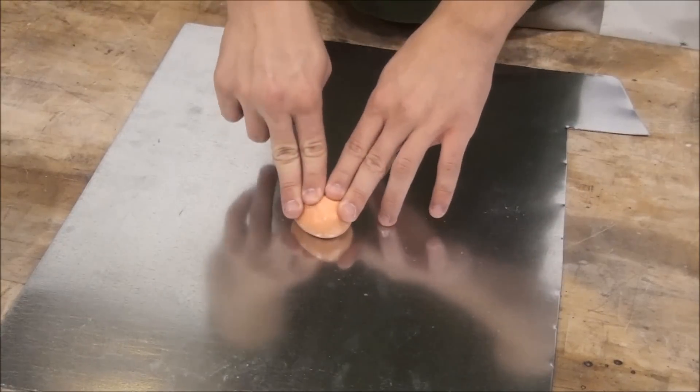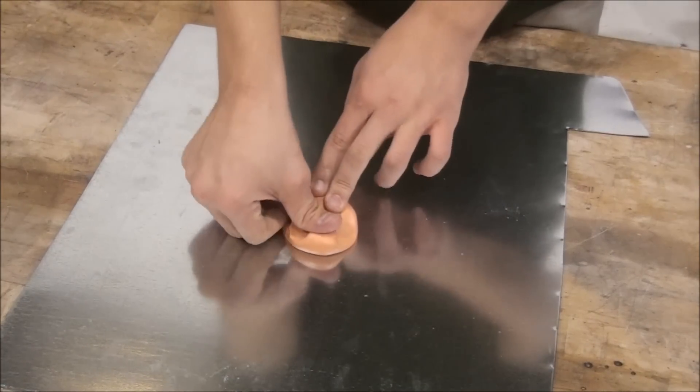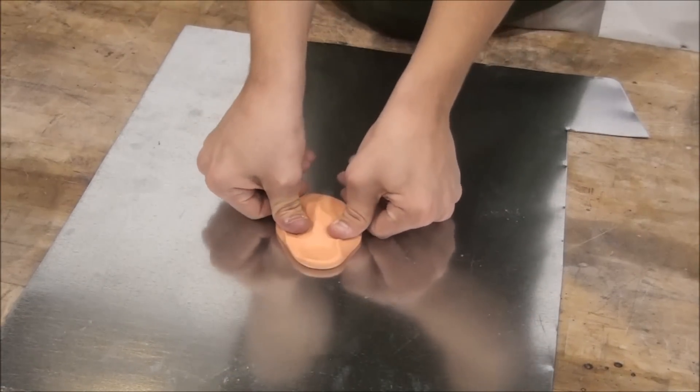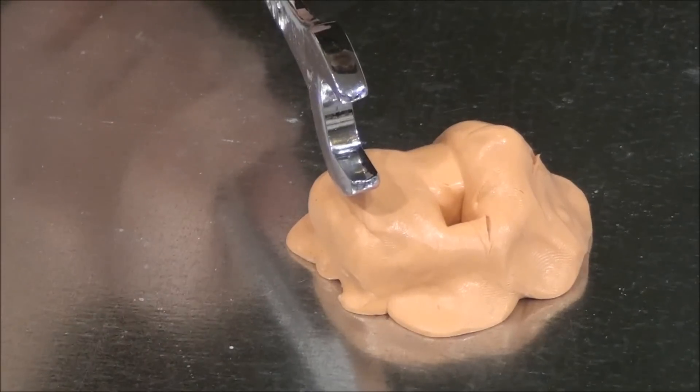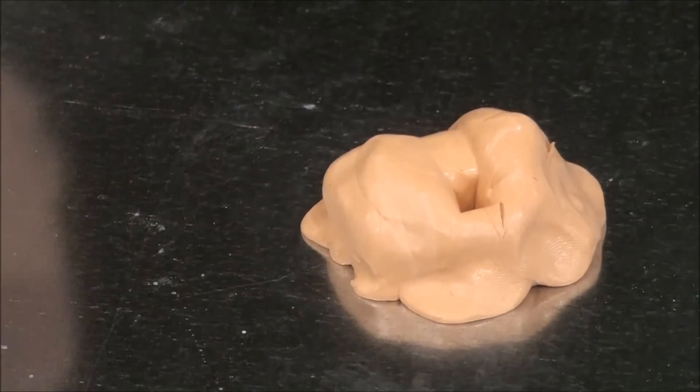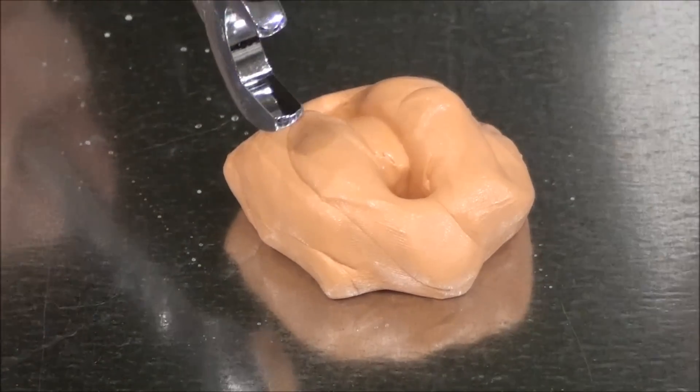Silly Putty is another non-Newtonian fluid. This one, however, requires a minimum shearing stress before it starts to flow. Here's a wrench hitting Silly Putty. Notice the force of the wrench is not enough to deform it.